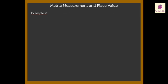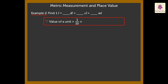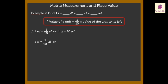Next, let's find the relation between litre, deciliter, centilitre, and millilitre. We know that the value of a unit is one-tenth the value of the unit to its left. Therefore, one millilitre is equal to one-tenth centilitre, or one centilitre equals ten millilitres. Similarly, one deciliter equals ten centilitres.